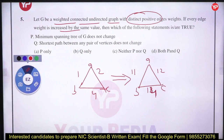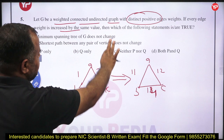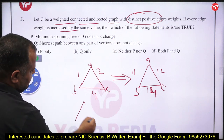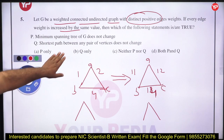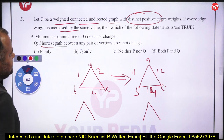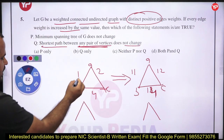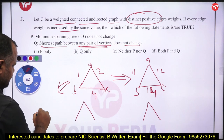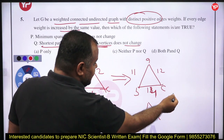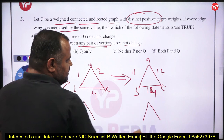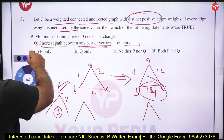We need to find the true statement. The minimum spanning tree of G does not change — this is true, because adding the same constant to all edge weights preserves relative ordering. However, the shortest path between any pair of vertices may change. For example, the shortest path from B to C was via A (cost 3), but after adding 10 it becomes direct at cost 14, while going via A costs 11+12=23. So the shortest path can change. The true statement is A only.